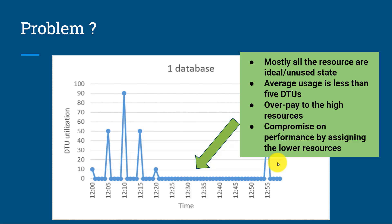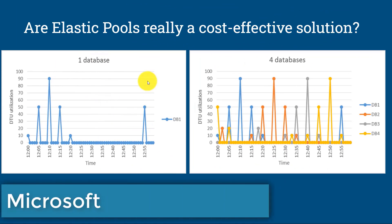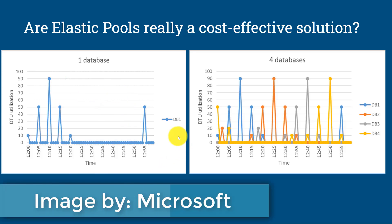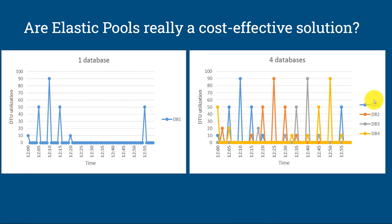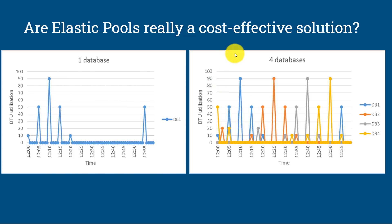So let's understand the elastic pool. If you have a similar kind of usage pattern like DB1, you can deploy multiple databases in an elastic pool with the same resource allocation. As you can see in the images, I have given 100 DTU and deployed four databases. With the same set of resources, you have deployed multiple databases. When DB1 consumes 90 DTU, the remaining databases are in the idle stage, and the average utilization across all databases is between 10 to 50 DTU.